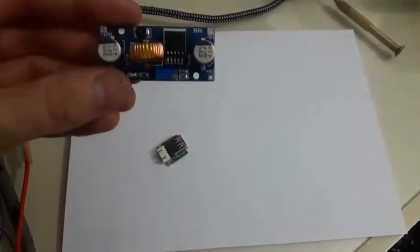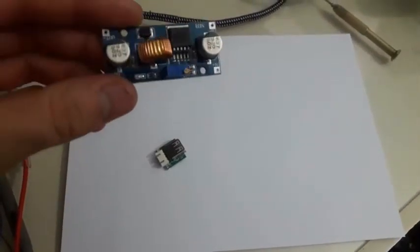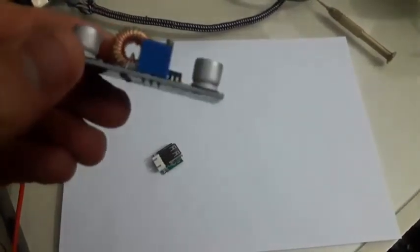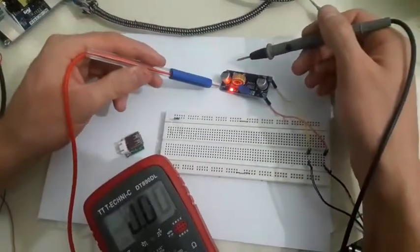USB ports are always supplied with 5 volts. To do so I will adjust the output voltage of this buck converter to 5 volts using a small screwdriver.